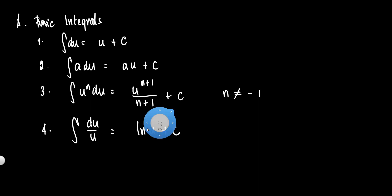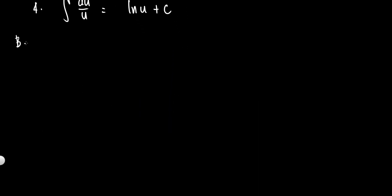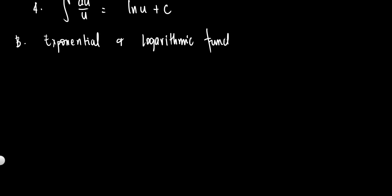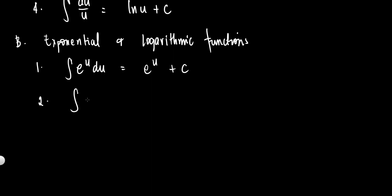So those are the basic integrals. Next is letter b — the formula for the exponential and logarithmic functions. We need to memorize these; solving will be much easier once we have every formula memorized. Number one: the integral of e to the u du is equal to e to the u plus c — just copy it directly. Number two: the integral of a to the u du is equal to a raised to u over ln of a, plus c.